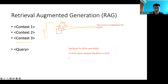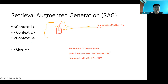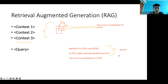So you ask the question: 'How much is a MacBook Pro 2019?' It's been shown that if you use retrieval augmented generation, you can improve the consistency of the output of the large language model, because you are grounding it in the retrieved context. This grounding is very important for a lot of real-world use cases, because if you don't ground it, you can end up with quite nonsensical generations.